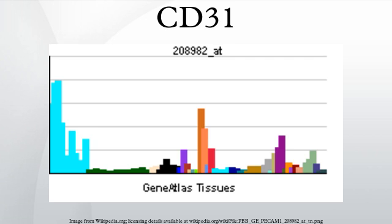Function: PECAM1 is found on the surface of platelets, monocytes, neutrophils, and some types of T cells, and makes up a large portion of endothelial cell intercellular junctions. The encoded protein is a member of the immunoglobulin superfamily and is likely involved in leukocyte transmigration, angiogenesis, and integrin activation.